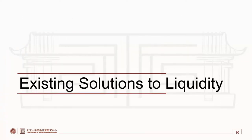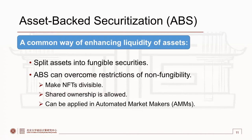A common way of enhancing the liquidity of assets is asset-backed securitization, ABS. ABS splits assets into fungible securities and can overcome restrictions of non-fungibility. ABS can make NFTs divisible and allow shared ownership. Furthermore, NFT securities can be applied in automated market makers.